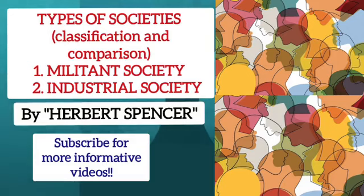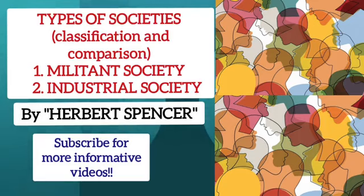The seventh characteristic of an industrial society is the awareness of the duty to resist a despotic government. In such a society, despotic government is considered to be irrelevant and wrong, and it becomes a positive duty on the part of citizens to resist it. The eighth and final characteristic is the dominance of free and contractual types of human relations.